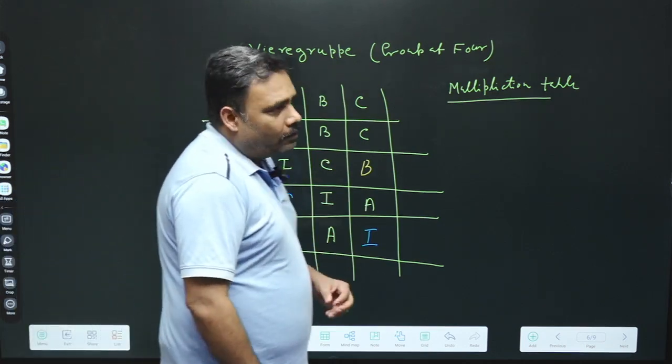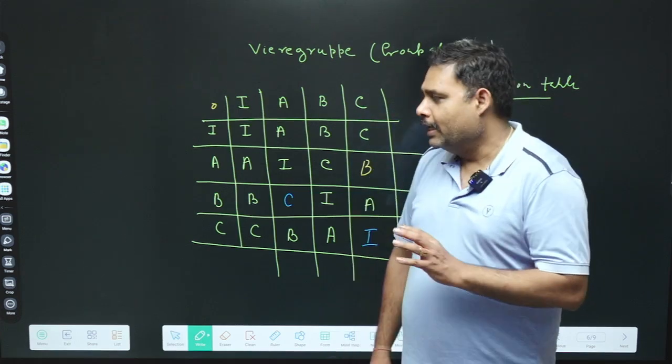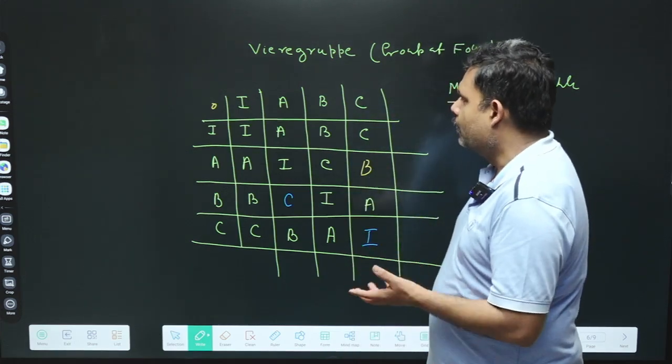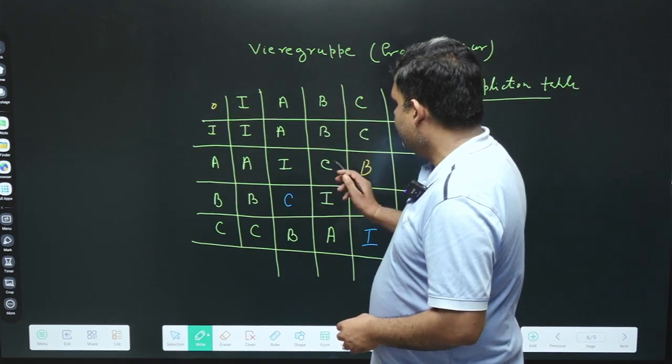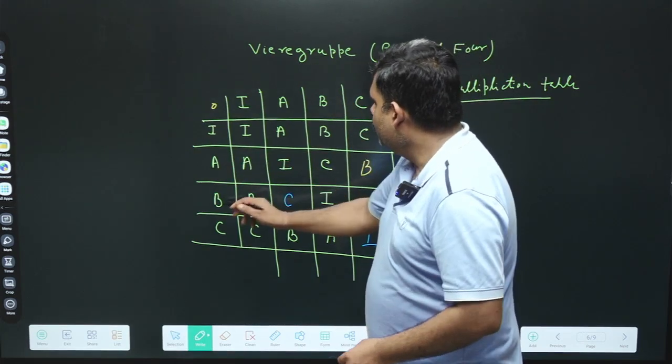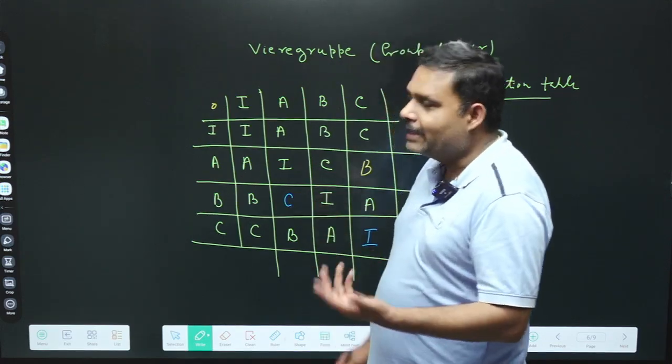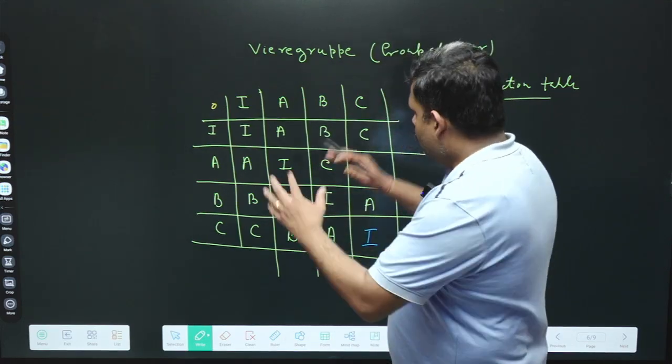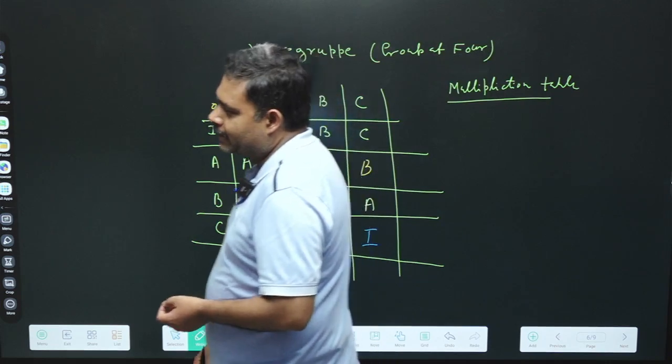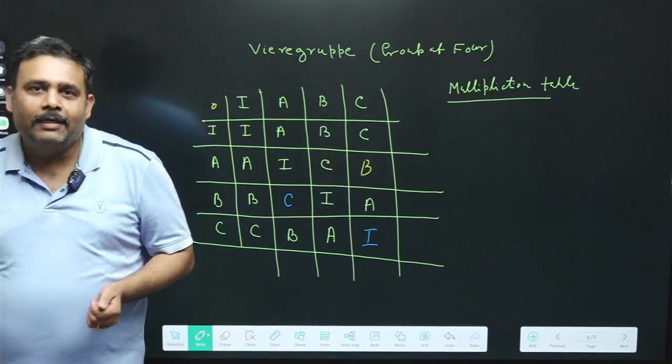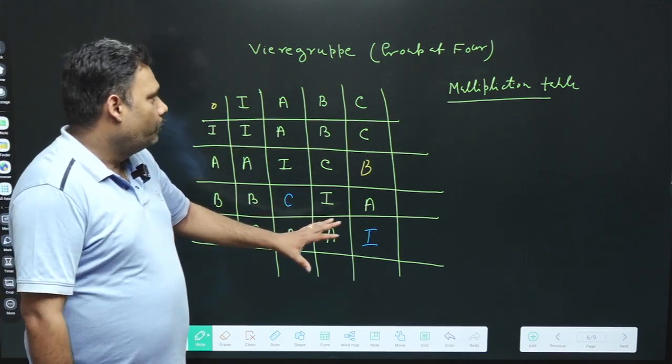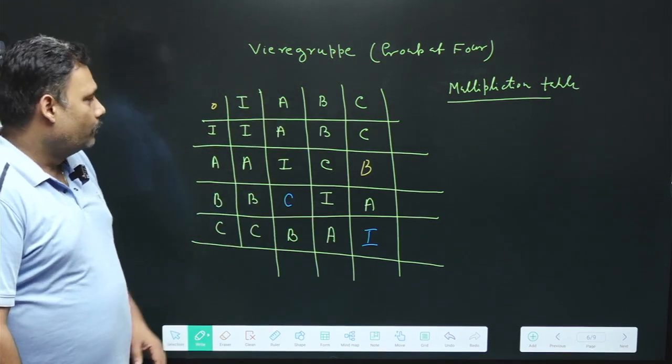You can also see whether this is an Abelian group or not. So what we will do: A operation B is C, then B operation A is also C. So yes, they are an Abelian group. From this particular multiplication table, we can easily figure out all the properties of the group, and this is a very famous German group.